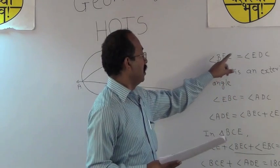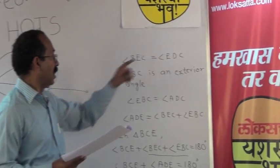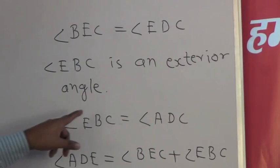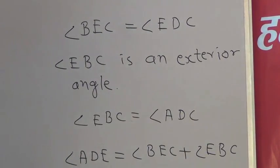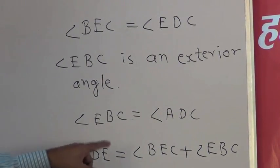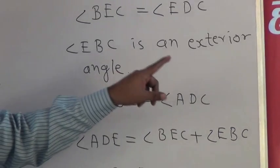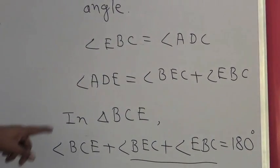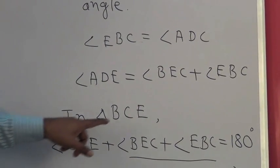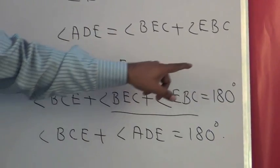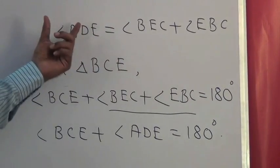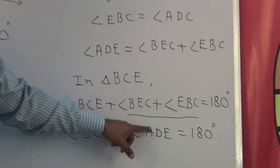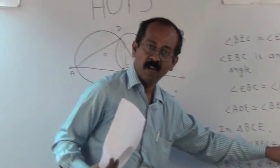Now angle BEC = angle EDC, because angles in alternate segments. Angle EBC is an exterior angle, so angle EBC = angle ADC. Now angle ADE = angle BEC + angle EBC. Finally, in triangle BCE, sum of 3 angles is 180°, that is angle BCE + angle BEC + angle EBC = 180°. Sum of these 2 angles is equal to angle ADE, so substituting that value we get angle BCE + angle ADE = 180°. Thus we have proved it.